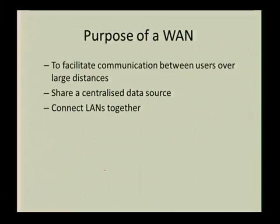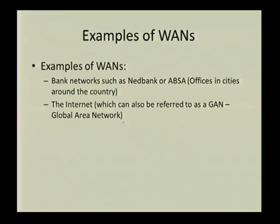What is the purpose of a WAN? It is to facilitate communication between users over long distances, to share centralized data sources, and to connect LANs together. An example of a WAN could be a banking network — Standard Bank, Ned Bank, or ABSA right across the country. You can go to any ATM in any little town and withdraw money. That is a very good example of a WAN.